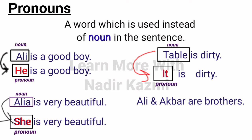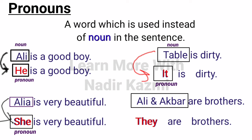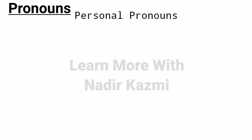'Ali and Akbar are brothers.' Here in this sentence there are two nouns — Ali and Akbar. But when I replace these nouns with a pronoun, it becomes 'They are brothers.' So you have seen that 'they' replaced two nouns. That's why these are pronouns. Now let's move to the kinds of pronouns.